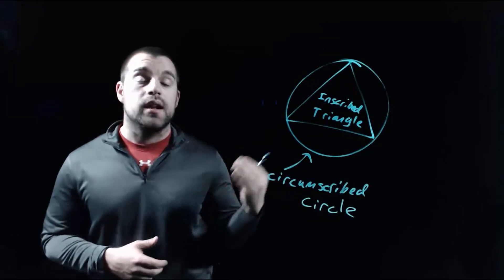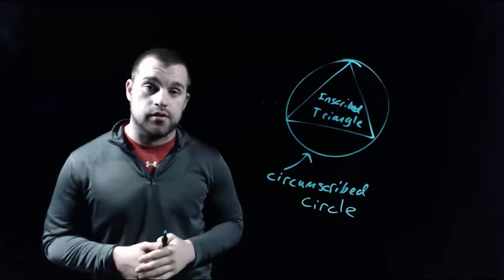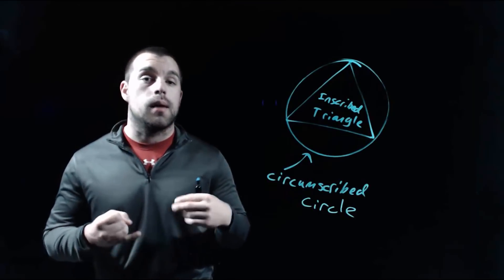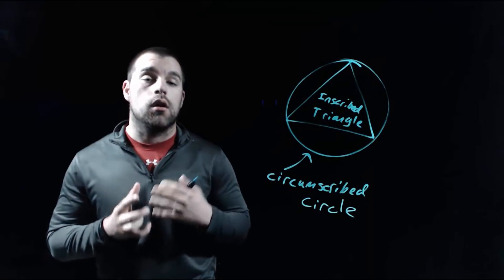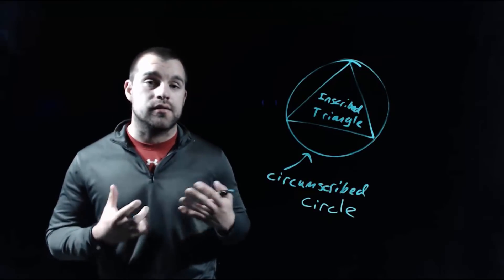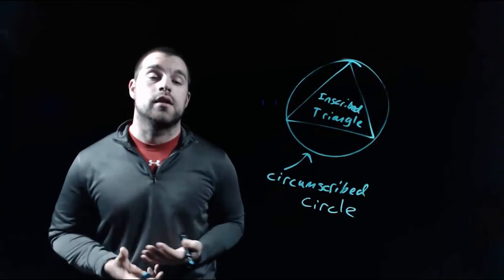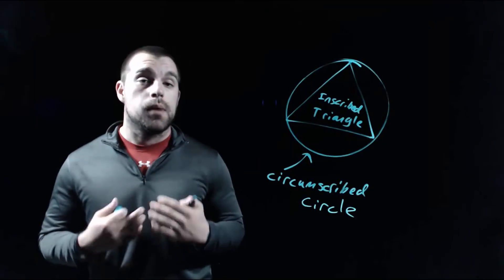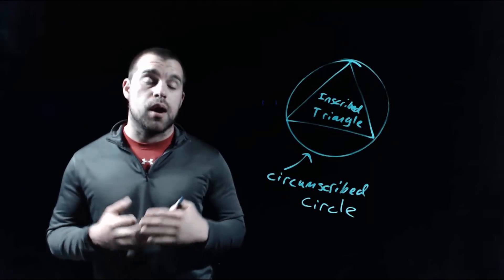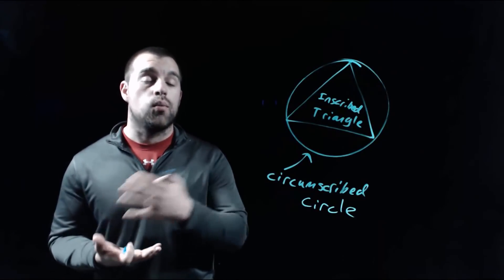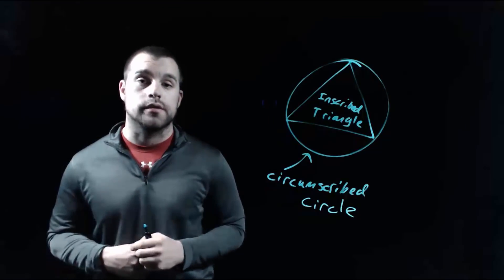Now we can inscribe more than just triangles within a circle. We can inscribe quadrilaterals or pentagons or hexagons — there are all different kinds of shapes that we can inscribe within a circle. But with each shape, there are some special properties that hold true when we're inscribing them within circles.